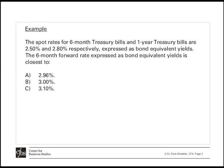Let's bring some light into this equation using the exam-type question on slide 3. The spot rates for the 6-month treasury bill and the 1-year treasury bill are 2.5% and 2.8% respectively. Please note that interest rates are always stated in annual terms.